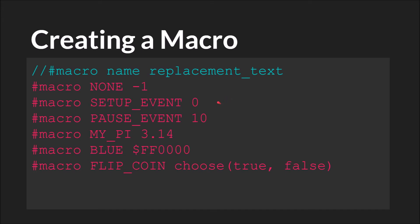To create a macro, you must first use the macro keyword, or hashtag macro, then the macro itself — the word you're going to use throughout your code — and then what you're going to replace that word with when the game is compiled. So: none, negative one. Setup, event zero. Pause, event ten. MyPi, 3.14. Blue, the hex code for blue. FlipCoin, choose true or false.